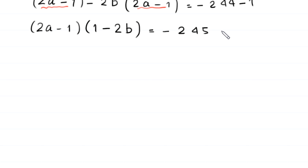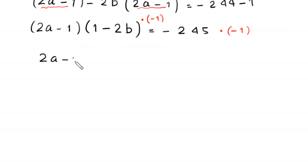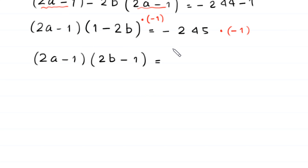Now we multiply both sides of this equation by negative 1. On the left hand side, 2a minus 1 remains the same, and negative 1 times negative 2b becomes positive 2b, while negative 1 times 1 becomes negative 1. So we get (2a minus 1) times (2b minus 1) is equal to positive 245.